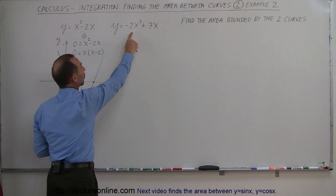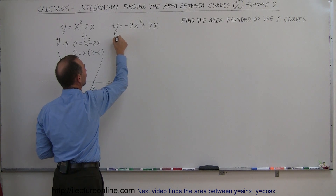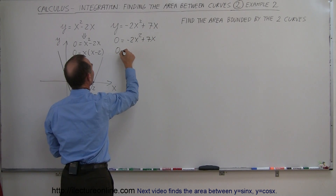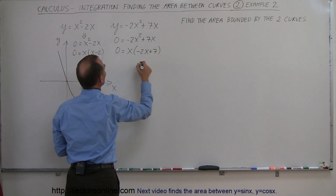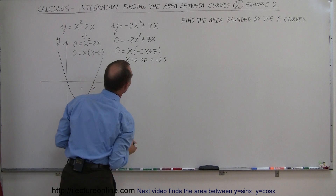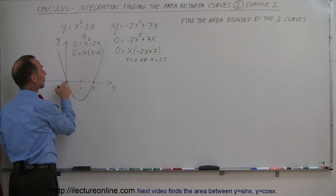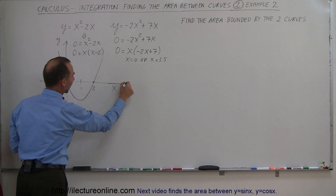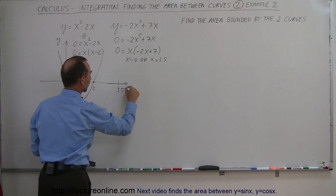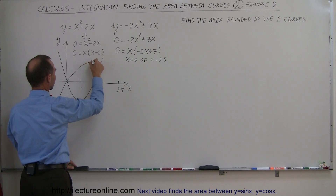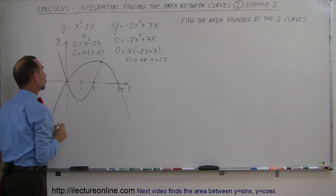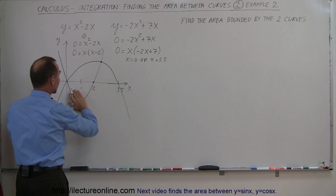Now doing the same with the second equation — notice it opens downward because the x squared term is negative. Setting it equal to zero: zero equals minus 2x squared plus 7x. We factor out x to get zero equals x times (minus 2x plus 7), which means x equals zero or x equals 3.5. So it crosses the x-axis at the origin and again at x equals 3.5. The parabola looks like this, and notice there will be intersections between the two graphs at two points, giving us the enclosed area we're interested in.